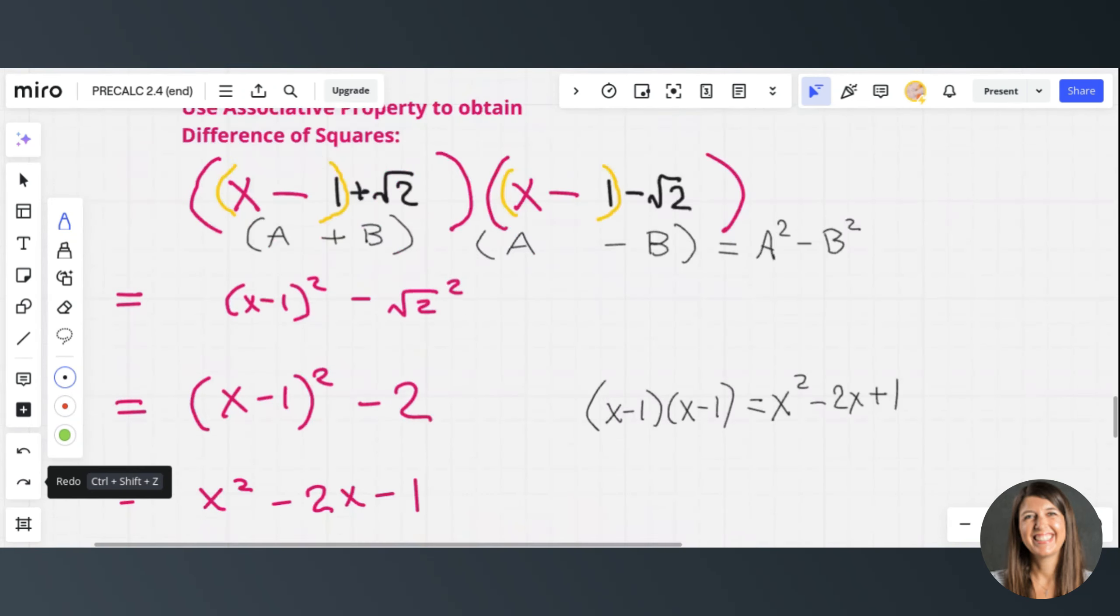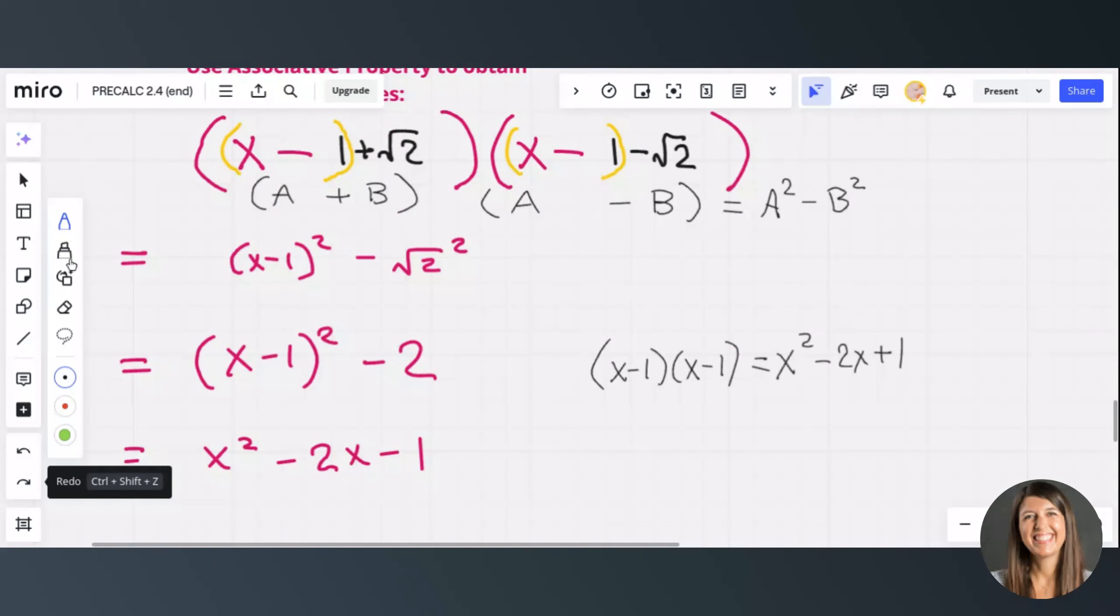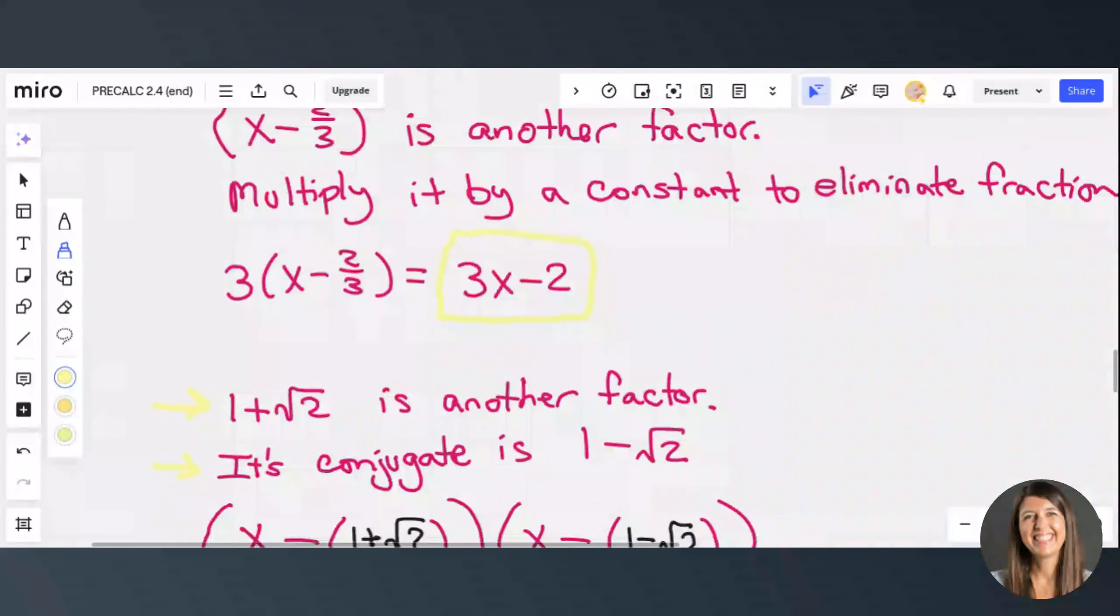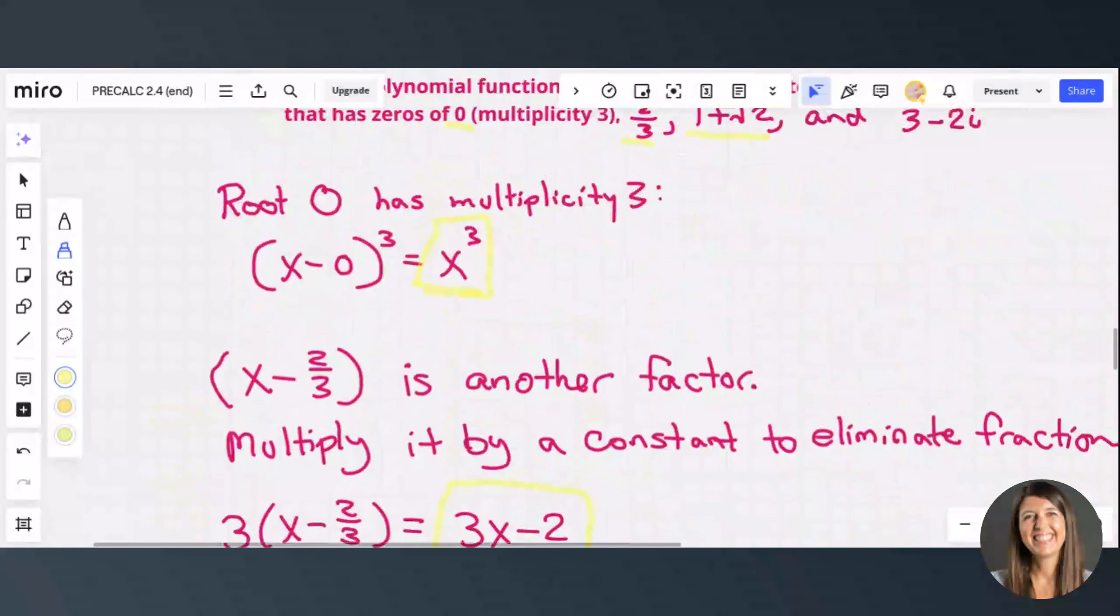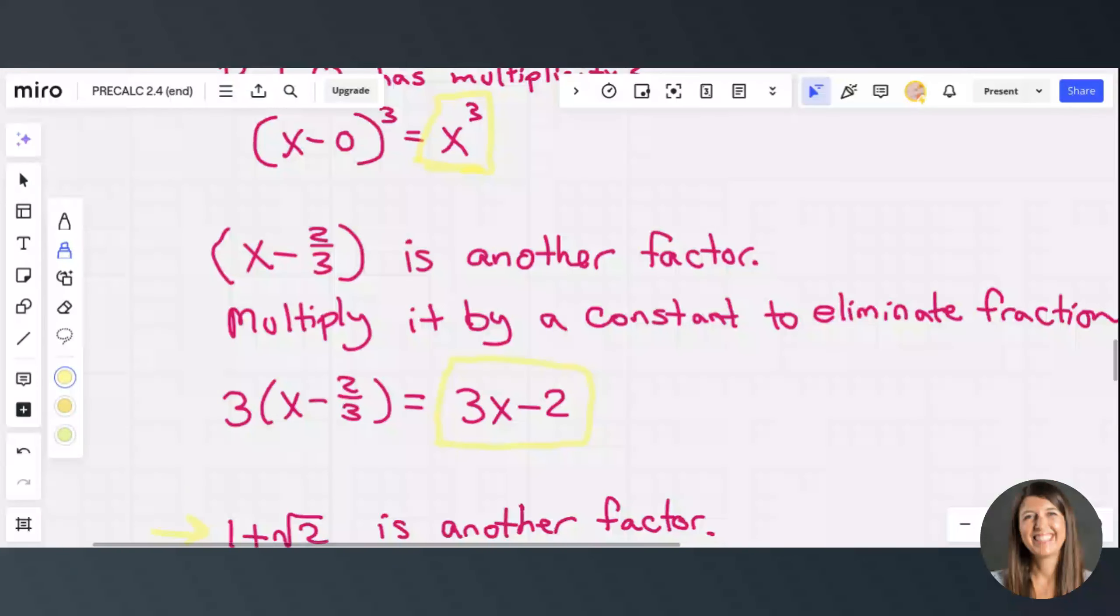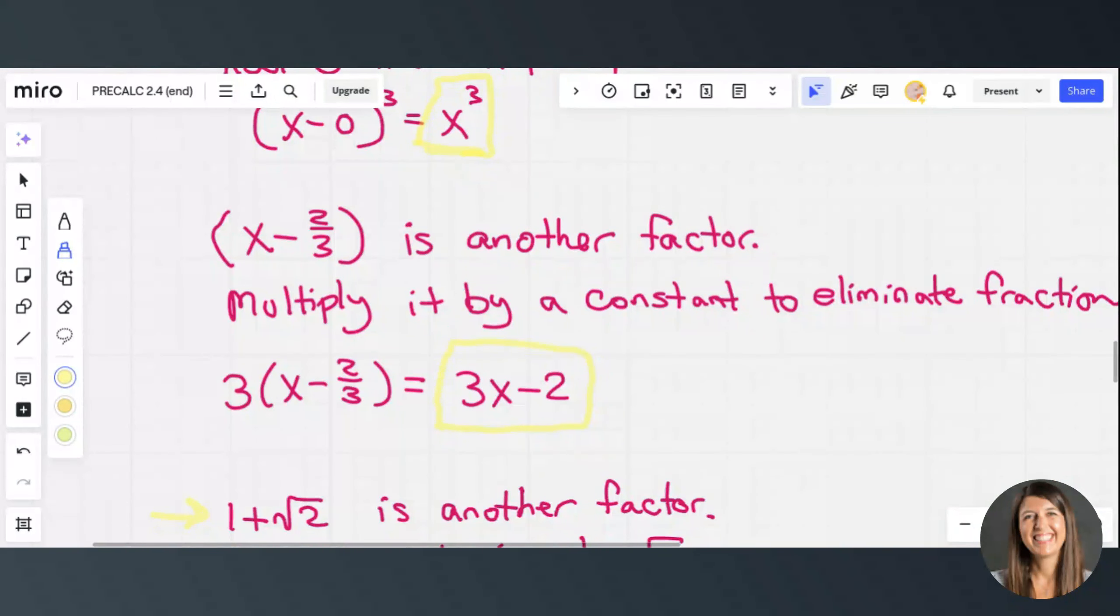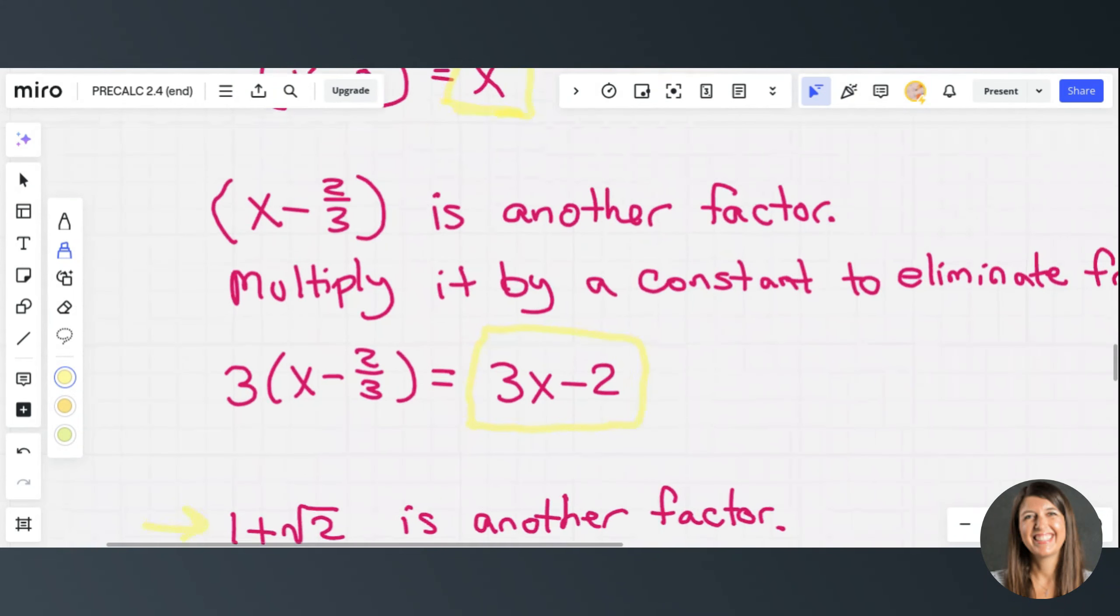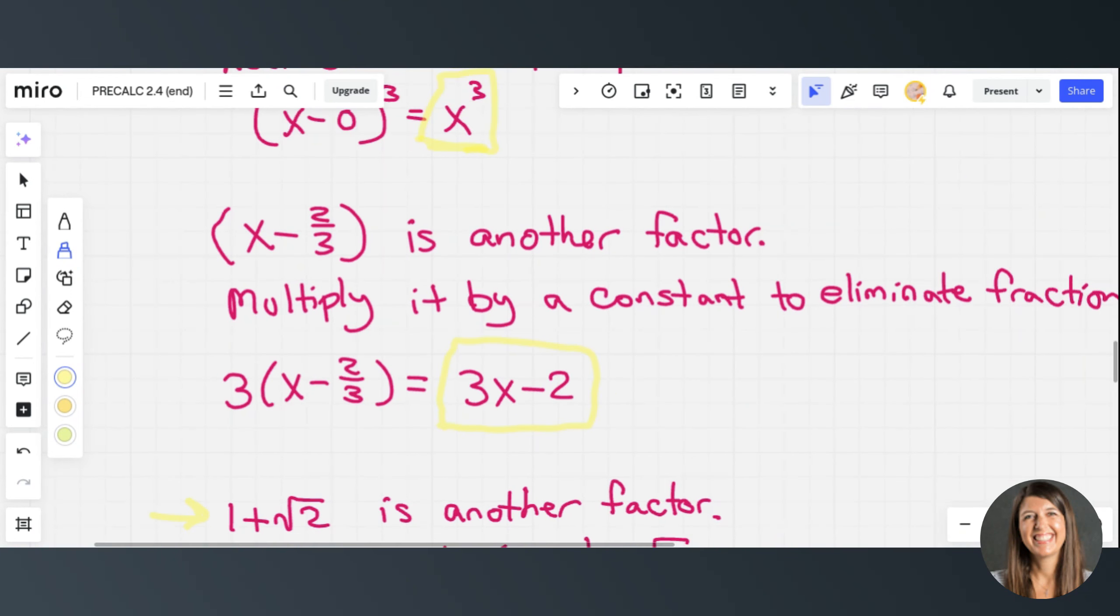So if we go back and figure out what we've been doing, because this problem is so long. We got the x cubed factor from the root 0 with multiplicity 3. We got 3x minus 2 as a factor, because we knew 2/3 was a zero. That's our second factor.